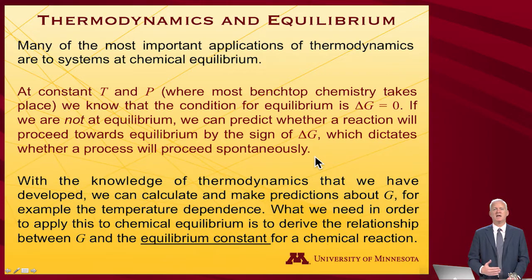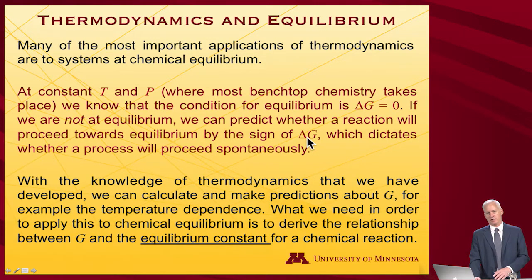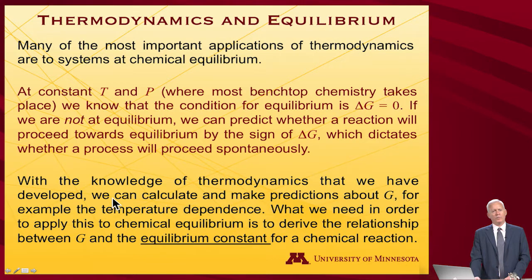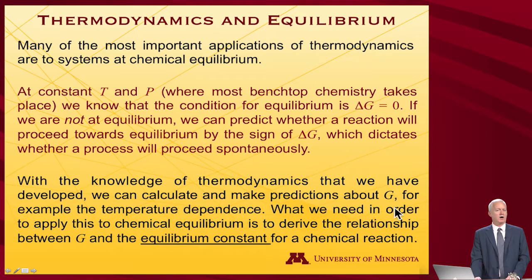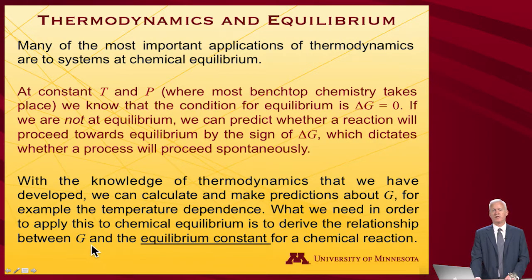There will be a spontaneous move in some direction where we want to know about the infinitesimal change — is it positive or is it negative? That will tell us about the spontaneity of a process. Delta implies a long path, potentially. With all the armament we've built up, we should be able to compute and make predictions about the free energy, and we know something about the temperature dependence of the free energy in order to derive relationships between the free energy and the equilibrium constant for a chemical reaction.